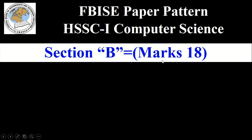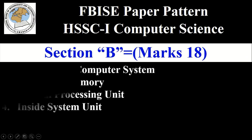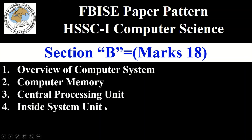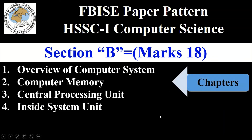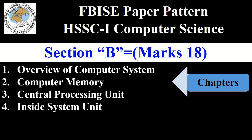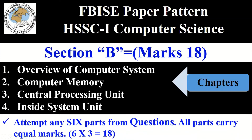Section B has 18 marks, and it covers some specific chapters reserved for Section B only. These are: Chapter 1 — Overview of Computer System, Chapter 2 — Computer Memory, Chapter 3 — Central Processing Unit, and Chapter 4 — Inside System Unit. These four chapters are included in Section B, which has 18 marks.